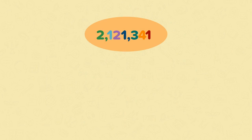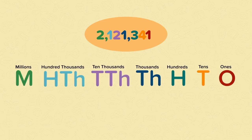So now let's look at a seven-digit number represented with place value counters. This is the number two million, one hundred and twenty-one thousand, three hundred and forty-one. We can look at each digit's value starting with the millions. Two million can be represented with two millions place value counters, so the value of the two in the millions place is two million.